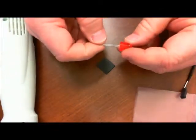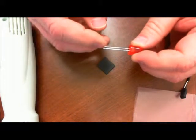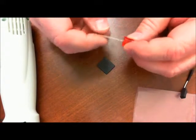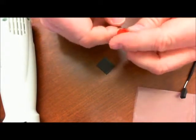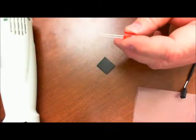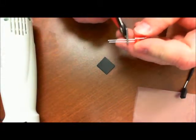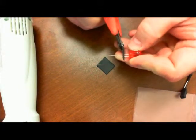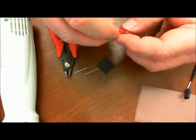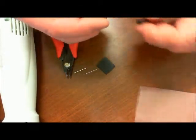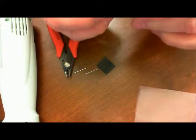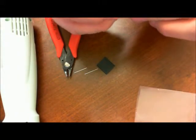So looking at the LED again, short lead is negative, long lead is positive. Kind of have to keep track of it. We'll cut that off. And the positive goes to the white, so that's going to go in there.